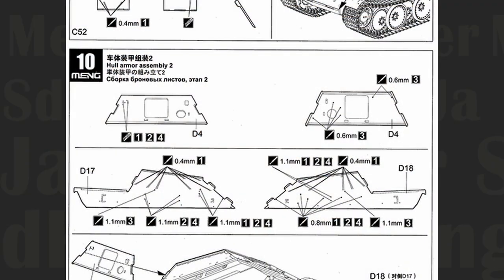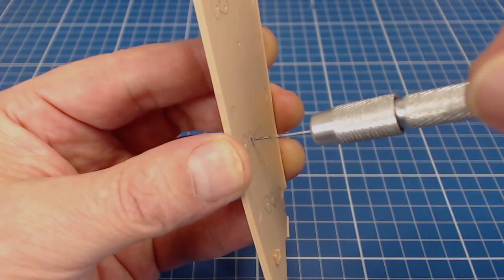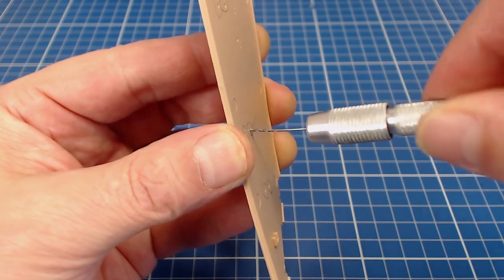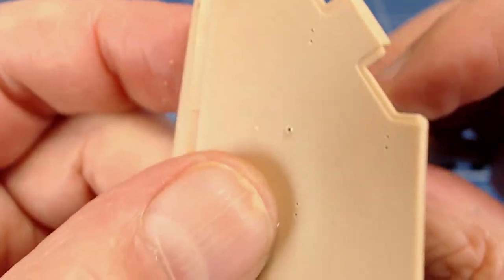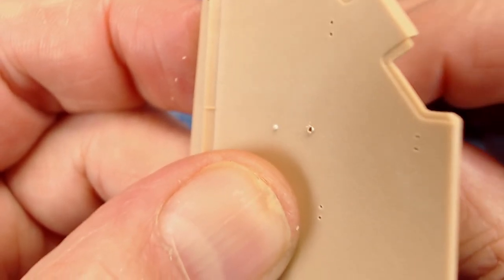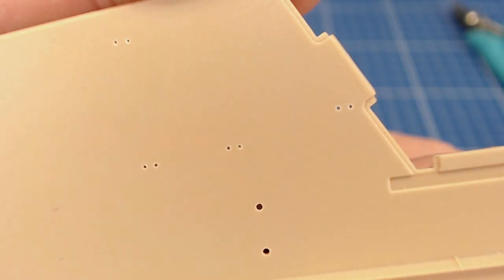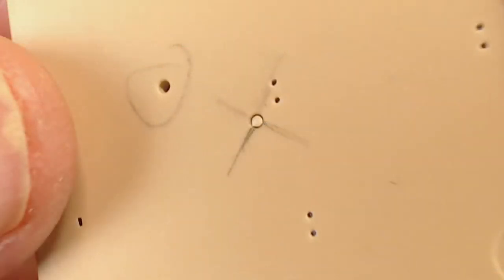Step 10 has us drill more holes, this time in the glacis and superstructure sides. Again, we must be careful to drill the holes corresponding to the variant we're building. It's important to get the hole sizes and their placement correct. It was a bit tricky for us since we're building a mix of variant parts. The larger holes are for the tool attachments, and the smaller ones are for our PE tie-down details. In case we drill a hole by accident, let's look at how we can fill it.